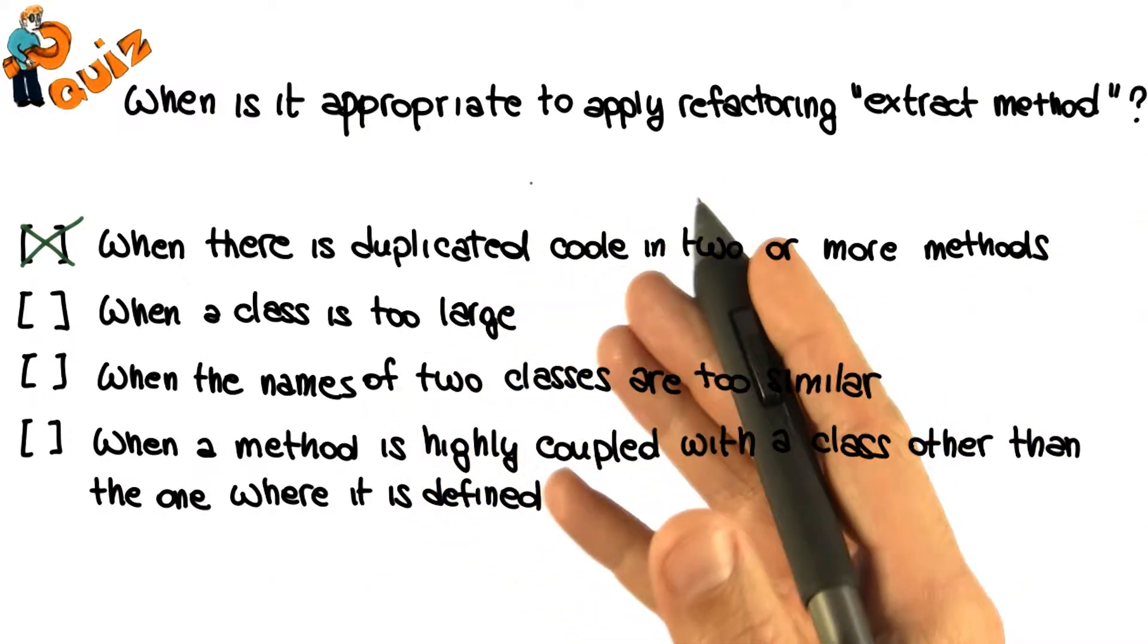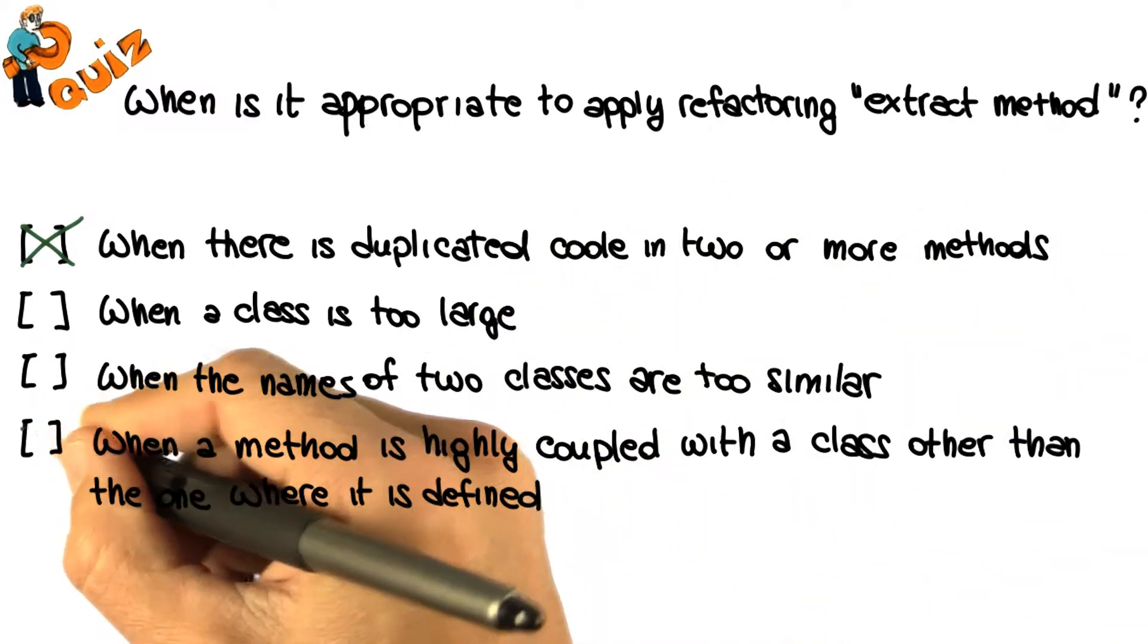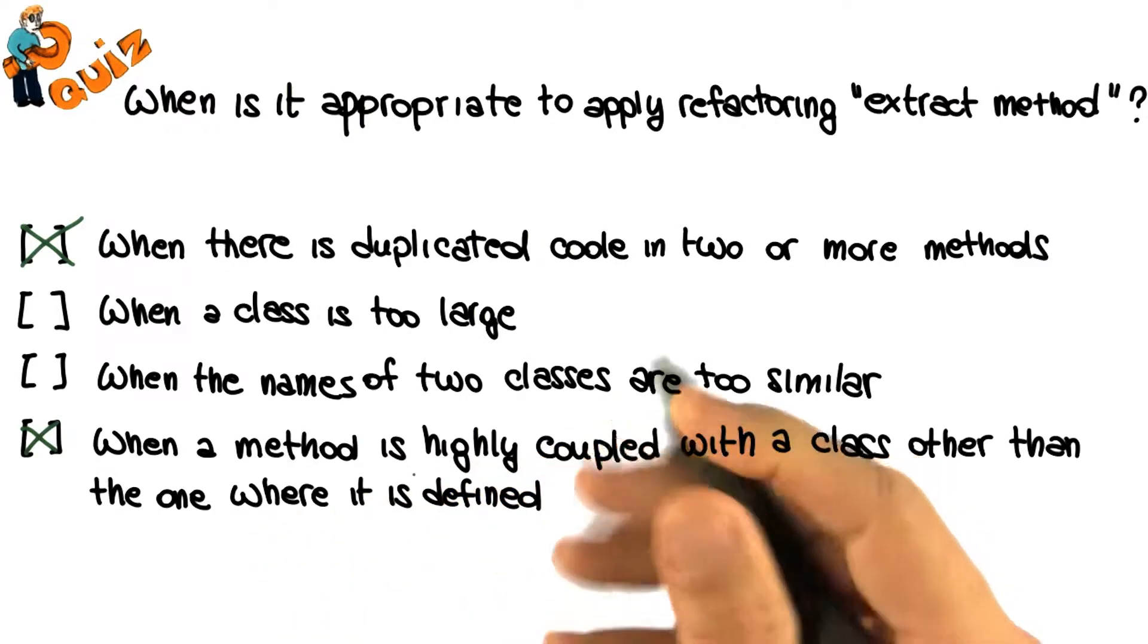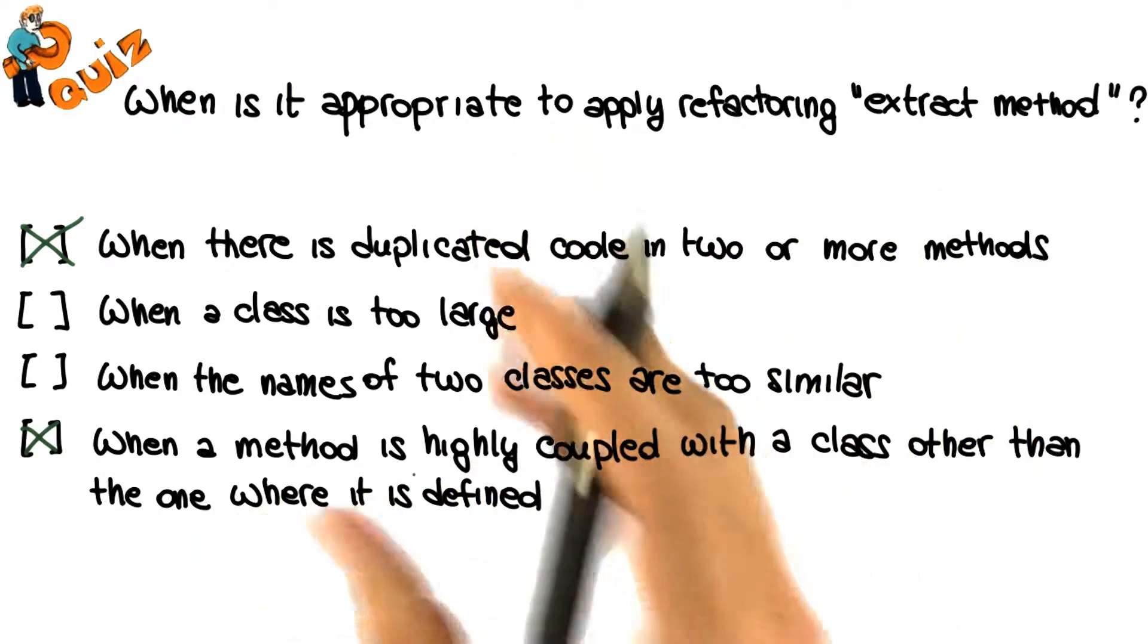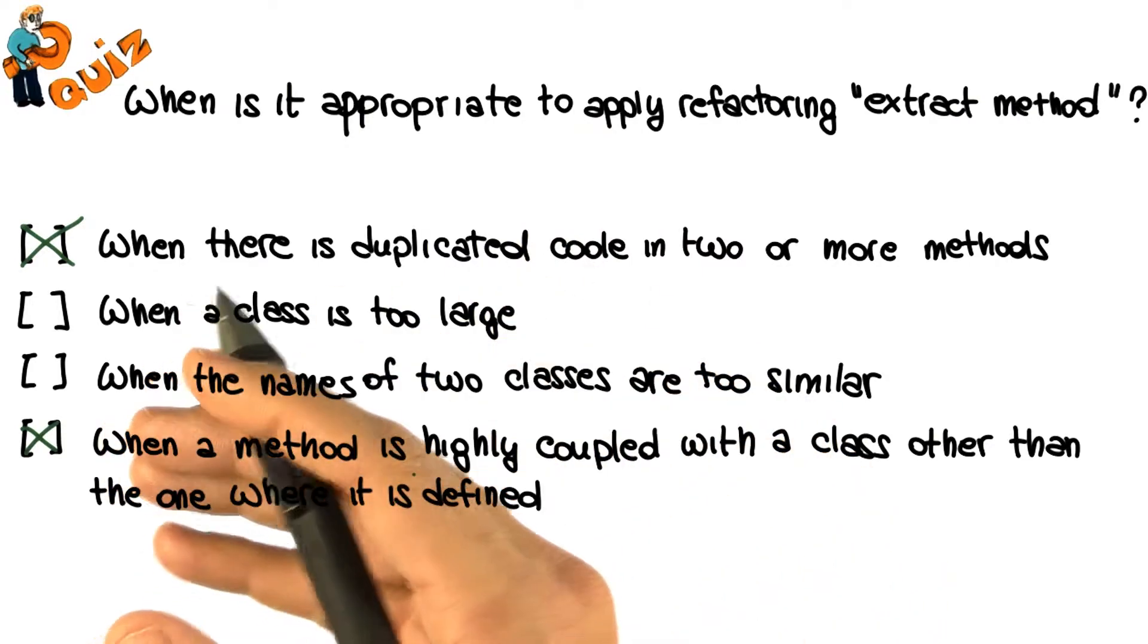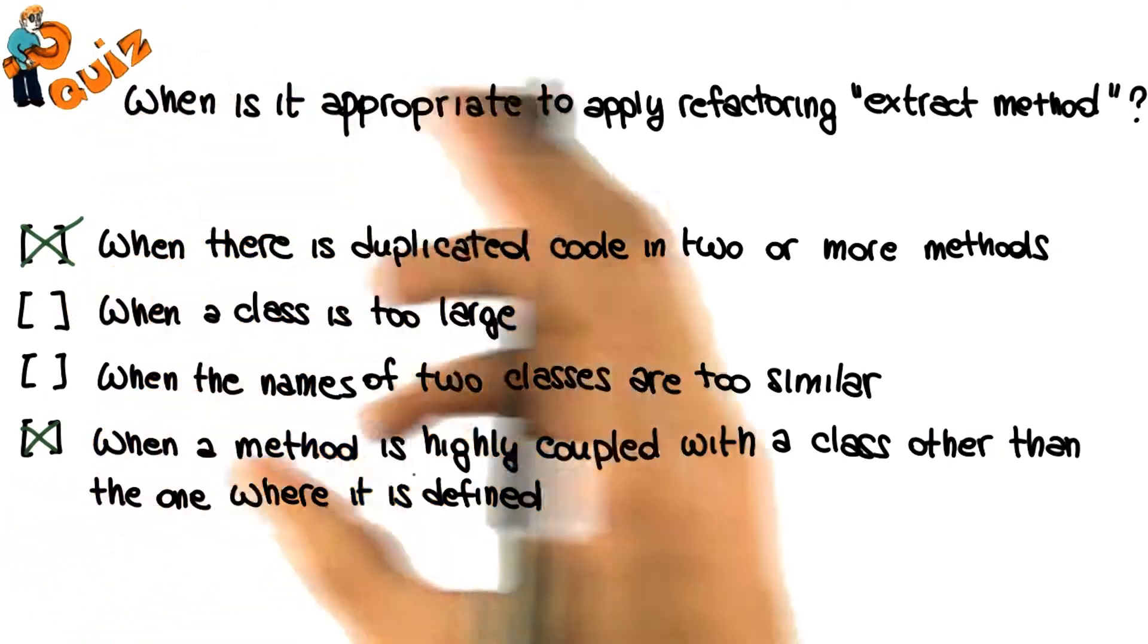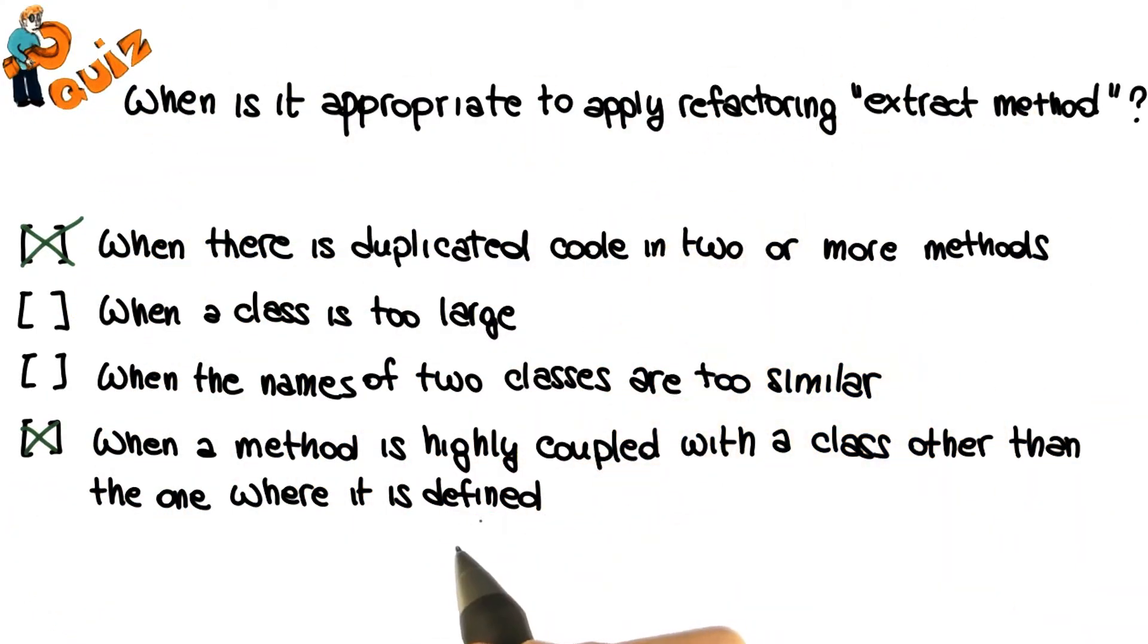Finally, it is definitely appropriate to apply the extract method refactoring in cases in which a method is highly coupled with a class other than the one where it is defined. In this case, which we will discuss later in the lesson, the extract method refactoring allows us to extract the part of the method that is coupled with the other class. Then we can take the method that we just extracted and move it to the class where it actually belongs. So the extract method is one of the two refactorings that it is appropriate to apply in these cases.